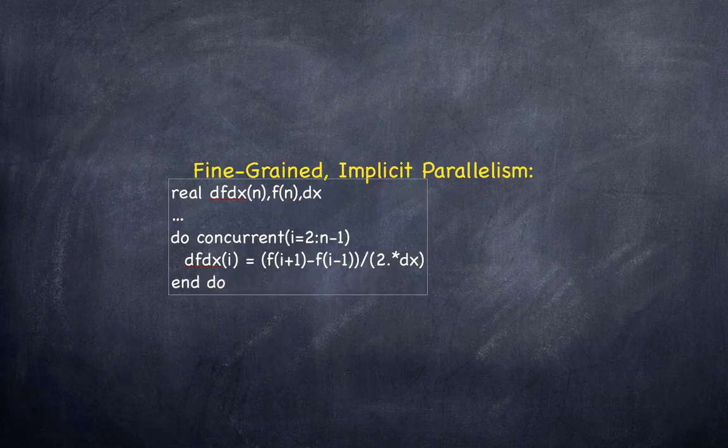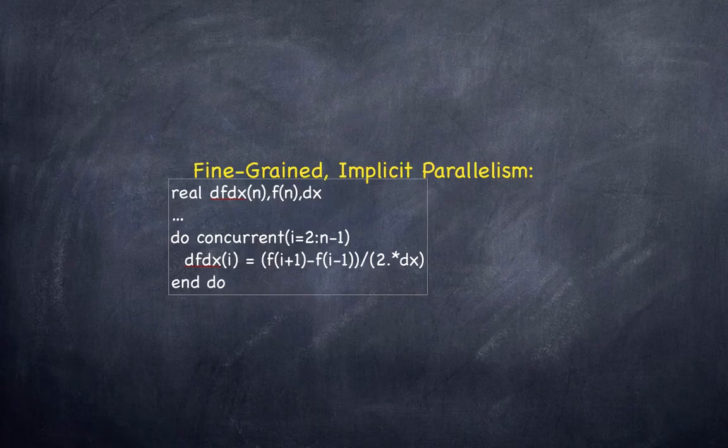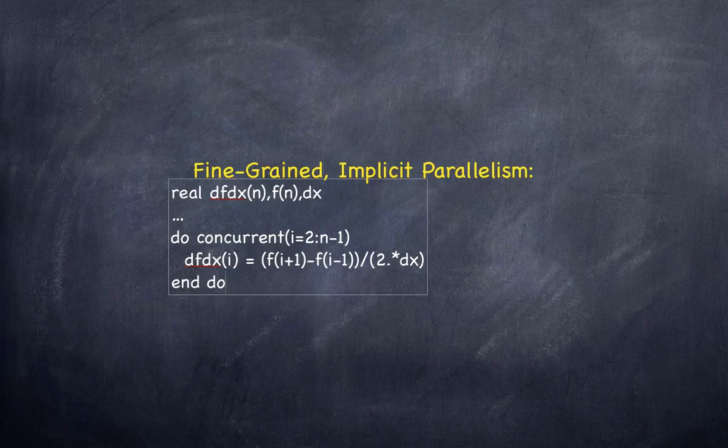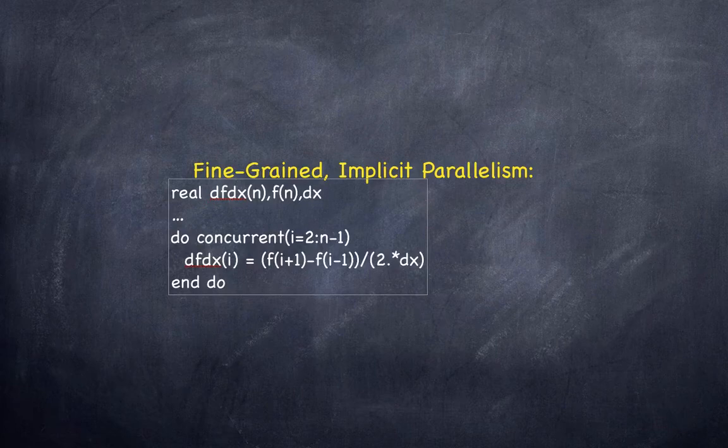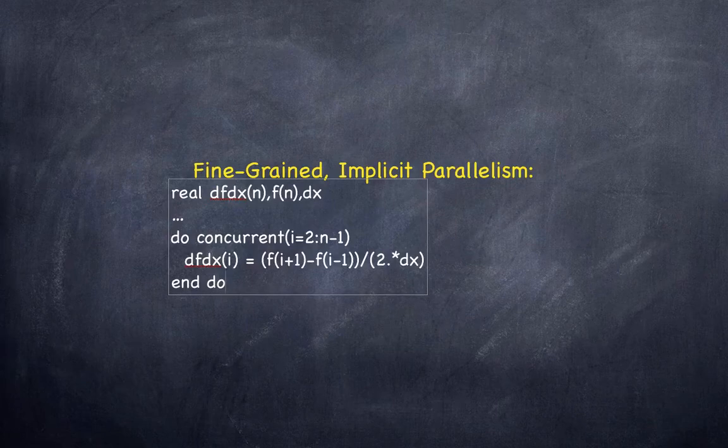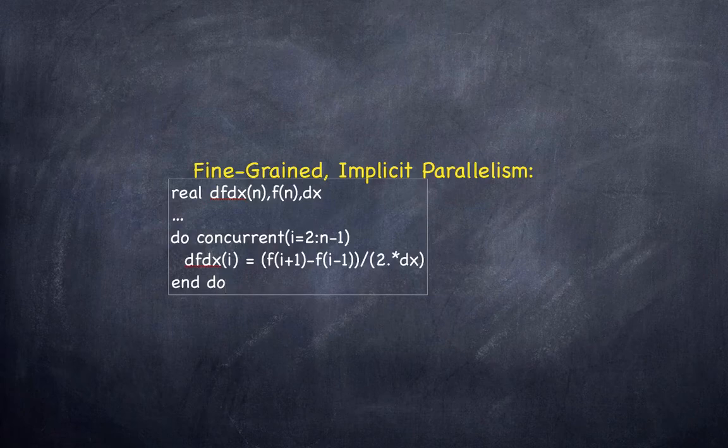What's significant about the do concurrent construct is that it enables us to communicate to the compiler the opportunity for concurrency but allowing the compiler to decide how to exploit that opportunity or possibly to not exploit it at all. Depending on the hardware that's available or the compiler that you're using you might end up with vectorization, you might end up with multi-threading.